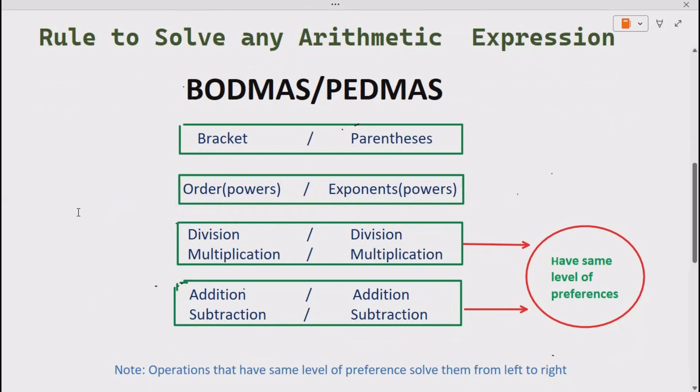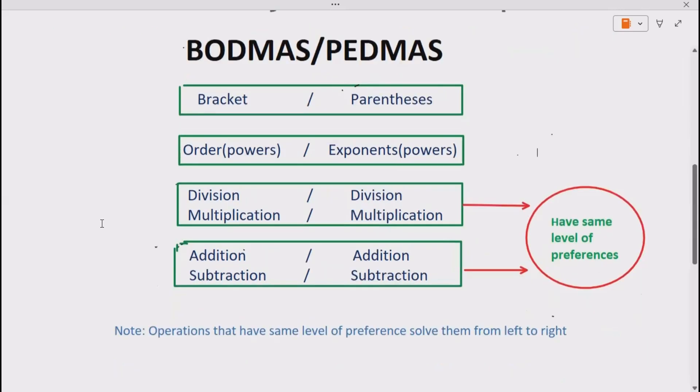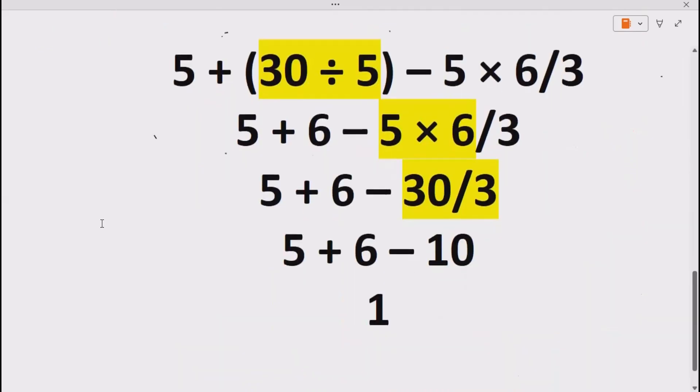Now let's see how we can solve our expression using these. So we are given 5 + (30 ÷ 5) - 5 × 6 ÷ 3. So we have to solve bracket first, going to BODMAS or PEDMAS. 30 divided with 5 gives us 6.